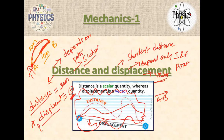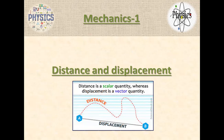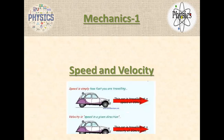Distance is 30 meters; displacement is zero. Is it clear? Yes, sir. So you don't have any doubt on distance and displacement. Now moving to speed and velocity.